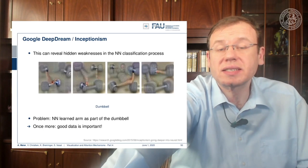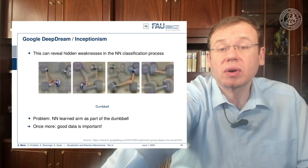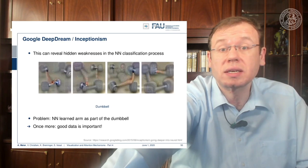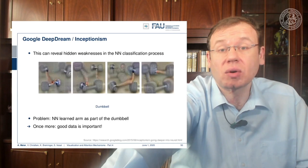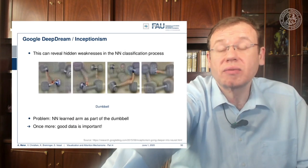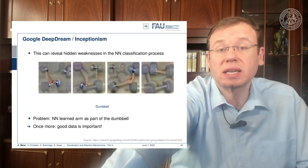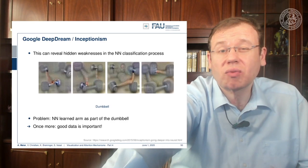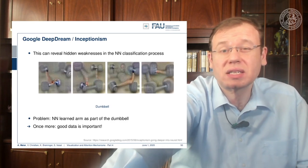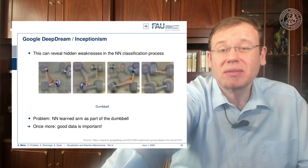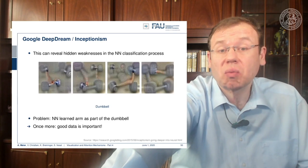We can use this to reveal hidden weaknesses in the neural network classification process. Here we see different realizations for the class 'dumbbell,' and you can see it's not only the dumbbell shown in the image but also the arm that is holding the dumbbell. This shows that correlated things are learned when they have been presented to the network, so we can figure out what the memory of a specific class or neuron with respect to the input is.